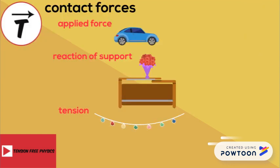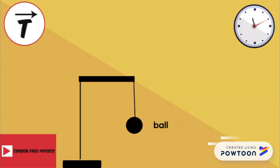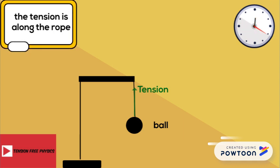Now consider another contact force: the tension force. The tension force is the force transmitted through a rope or a spring when pulled tight from both ends. Consider a ball attached to a rope as shown in the figure. The rope exerts a force on the ball that we call the tension force. This force starts from the contact point between the ball and the rope and is directed along the rope.